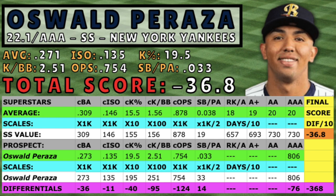Oswald Peraza is very similar to Anthony Volpe, just a year older and a level higher. He's MLB.com's number 38 overall prospect and the number 2 prospect in the Yankees organization behind Anthony Volpe. Peraza was signed in 2017 out of Venezuela and didn't really make a splash performance-wise until last year. He played through three levels at the age of 21, all the way to AA, where he finished the season with a .297 batting average, 18 home runs, and 38 stolen bases. During the 2021 season, Peraza gained a ton of hobby traction and entered the 2022 season at AAA.